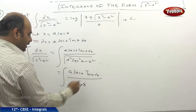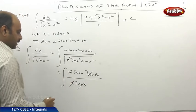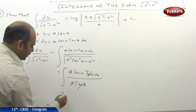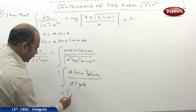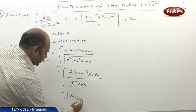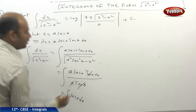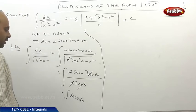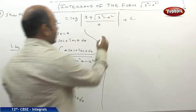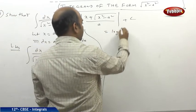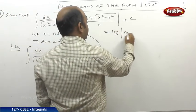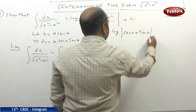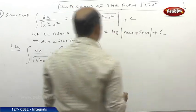The a's cancel and tan θ cancels, leaving the integral of sec θ dθ. The integral of sec θ dθ equals log mod (sec θ plus tan θ) plus c.